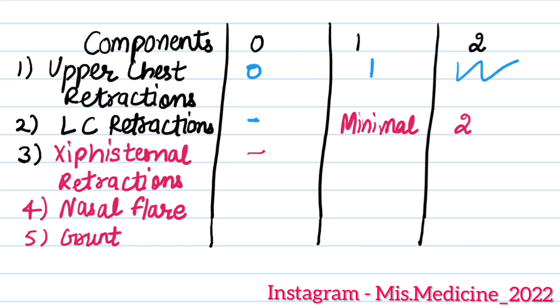Next one is xiphesternal retractions. If it is absent, of course then it's zero. If it's minimal, then it's one. If it's marked, then it's two.